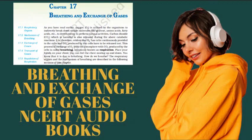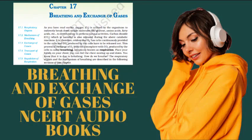The lungs are situated in the thoracic chamber which is anatomically an air-tight chamber. The thoracic chamber is formed dorsally by the vertebral column, ventrally by the sternum, laterally by the ribs and on the lower side by the dome-shaped diaphragm. Any change in the volume of the thoracic cavity will be reflected in the lung cavity. Such an arrangement is essential for breathing as we cannot directly alter the pulmonary volume. Respiration involves the following steps: First, breathing or pulmonary ventilation by which atmospheric air is drawn in and CO2 rich alveolar air is released out. Second, diffusion of gases across alveolar membrane. Third, transport of gases by the blood. Fourth, diffusion of CO2 and O2 between blood and tissues. Fifth, utilization of O2 by the cells for catabolic reactions and resultant release of CO2, as dealt in Chapter 14.